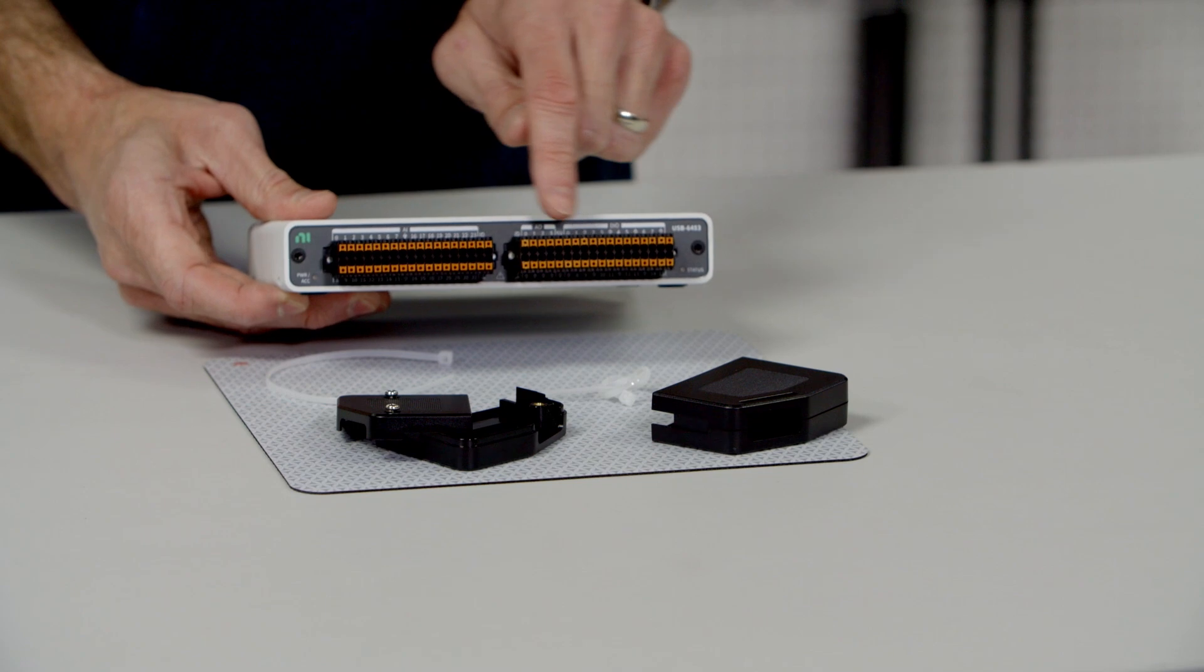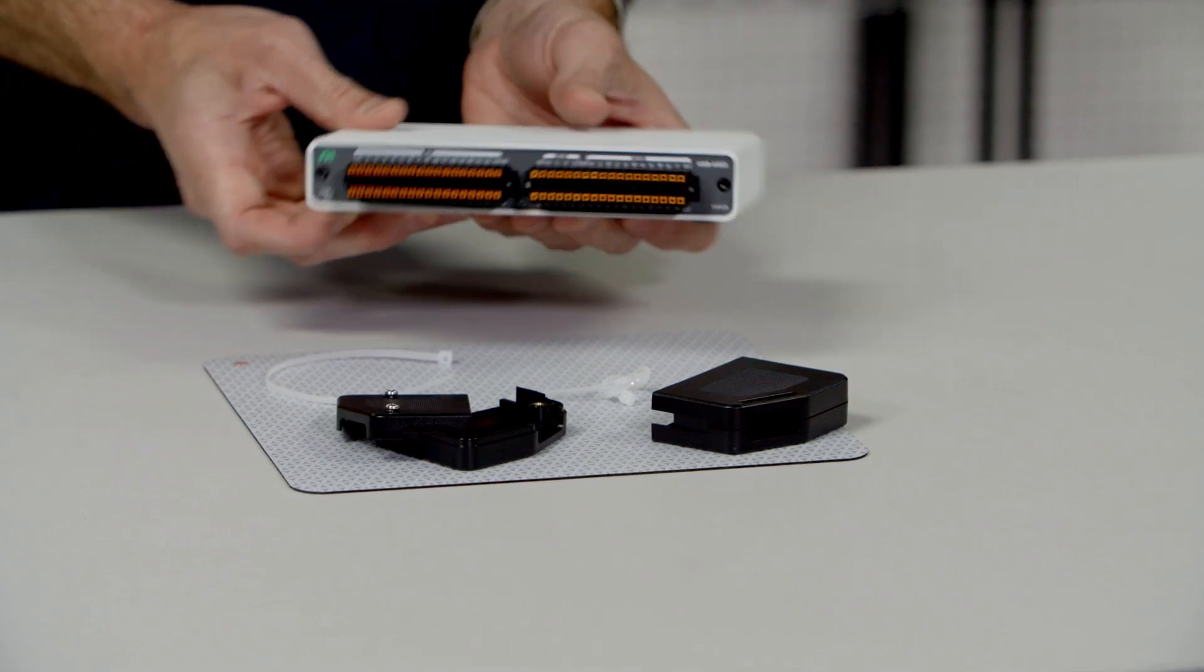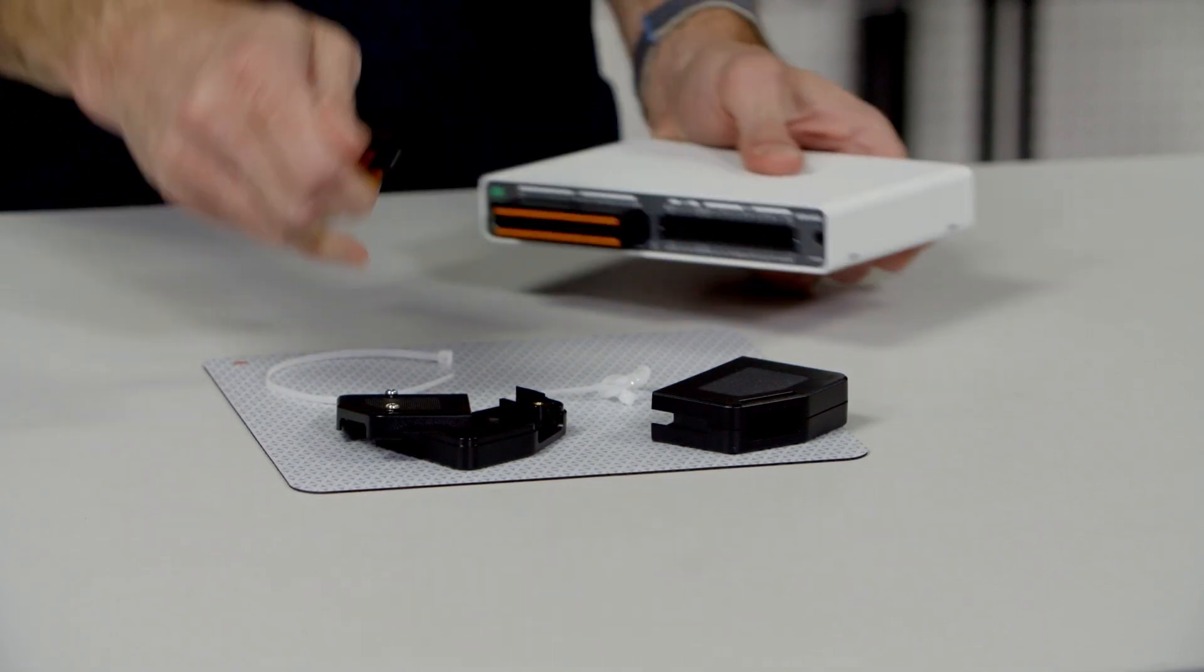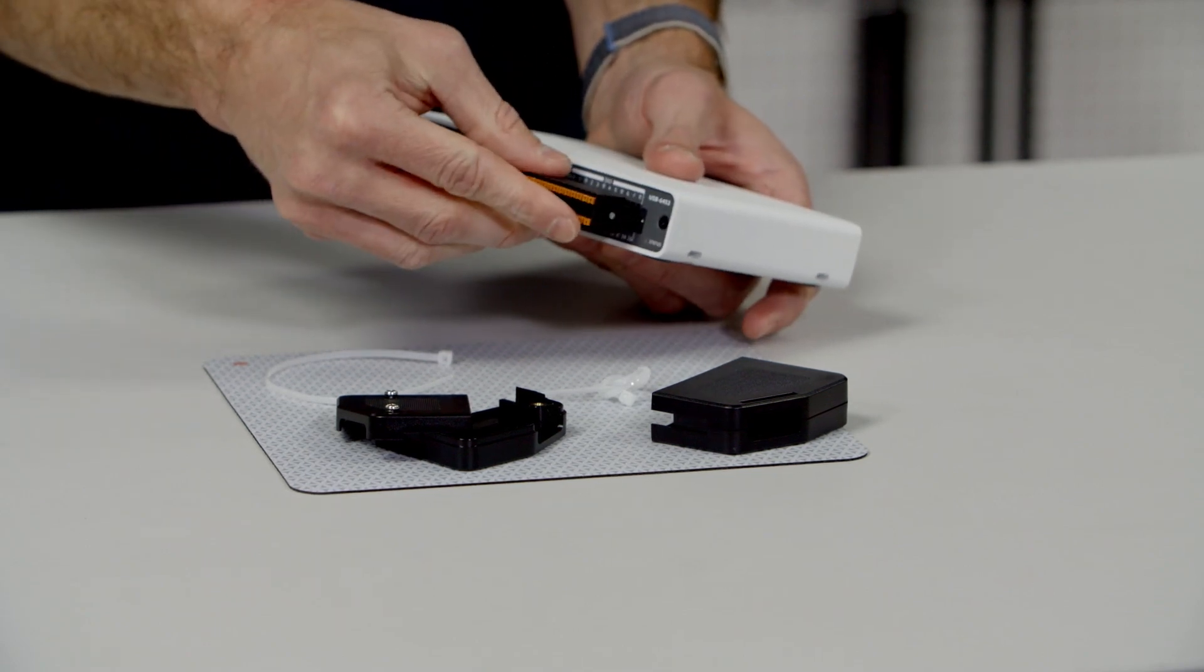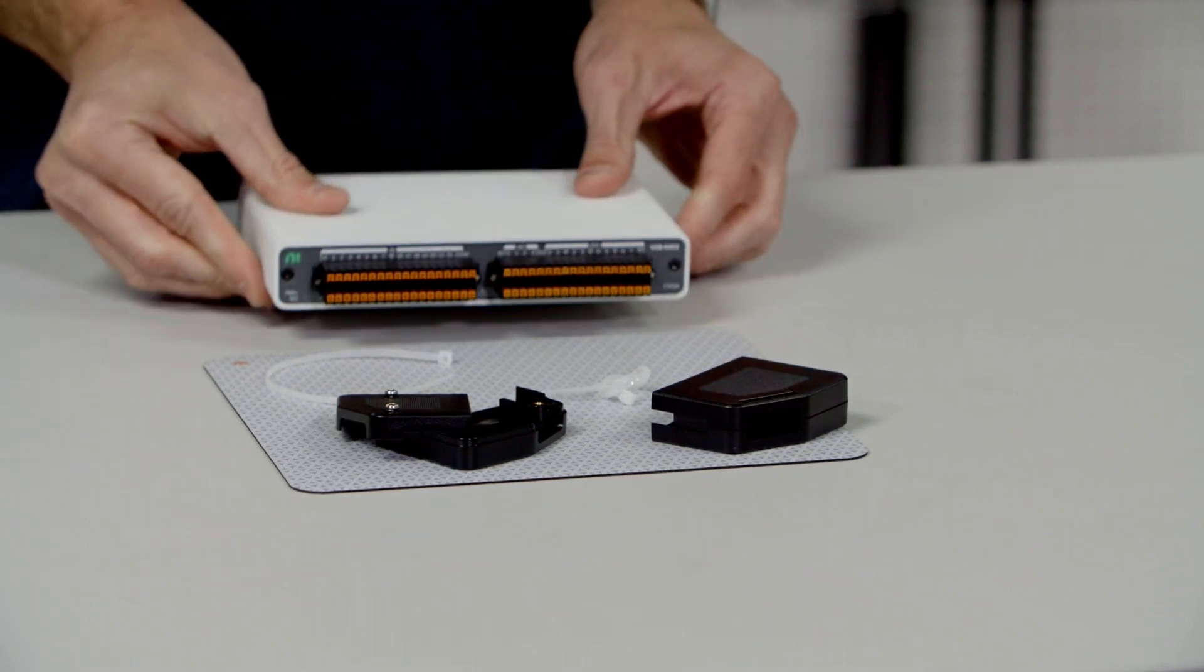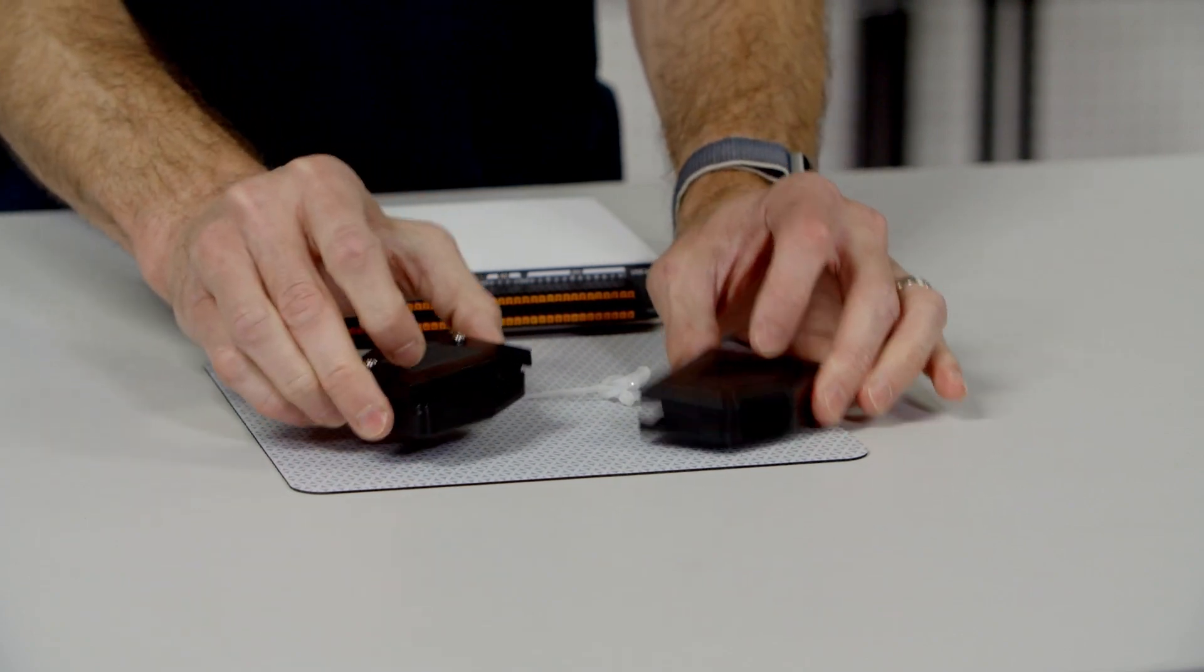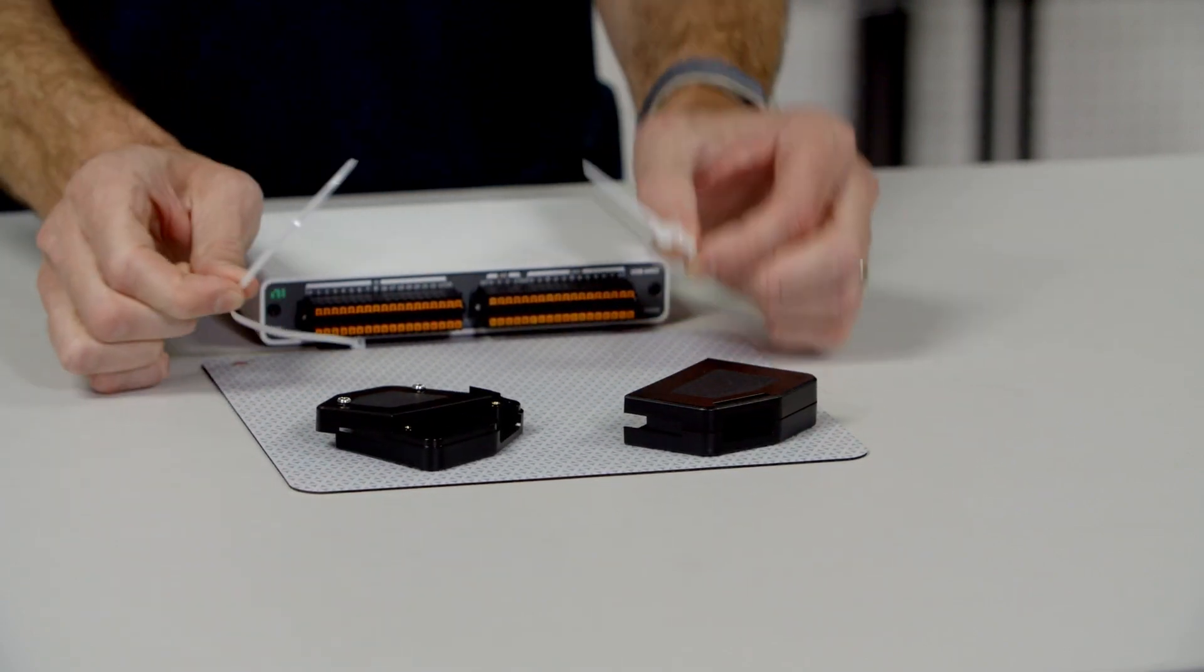MEODAC has two spring terminal connectors. These both ship in the kit. They're removable and they're keyed so they will only go in one direction. Also in the shipping kit, two back shells and two zip ties.